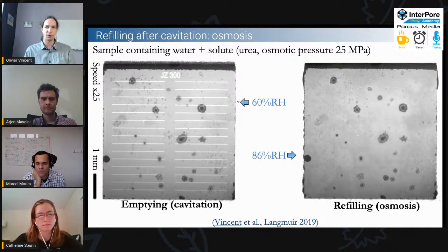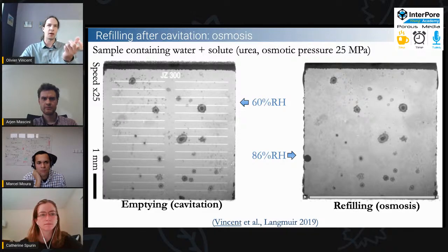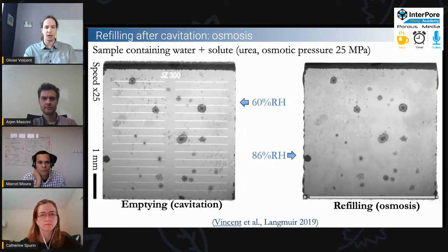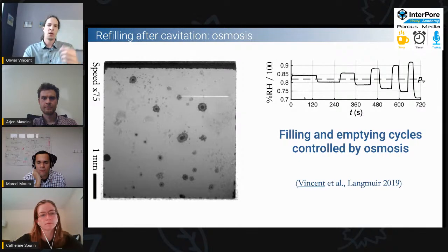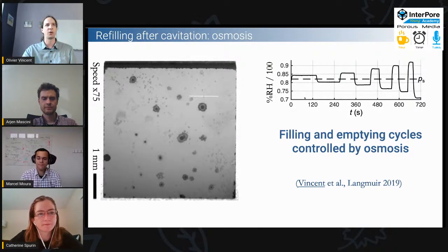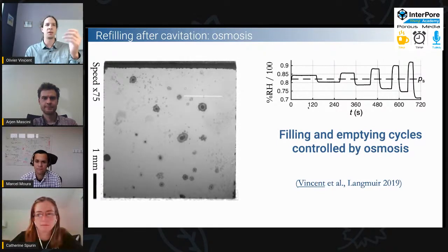The reason for this is osmotic flows in the system. Due to the interaction of humidity with the solutes at the edge, we create gradients of concentration that drive osmotic flows which refill — or can also empty — the system. We can play around with this by changing the humidity: going from low to high humidity, we can empty or fill the system reversibly, just by changing the external humidity imposed on the system.